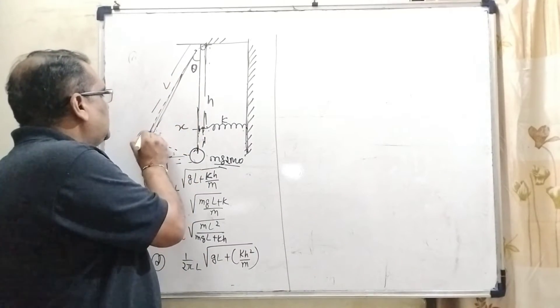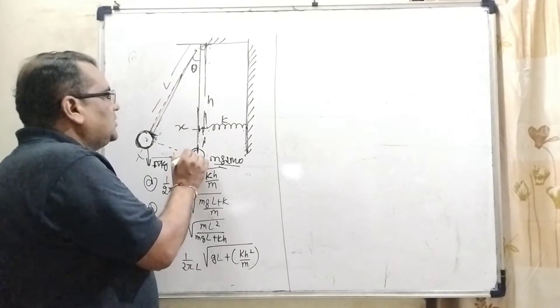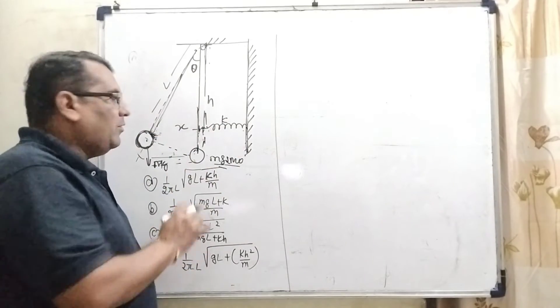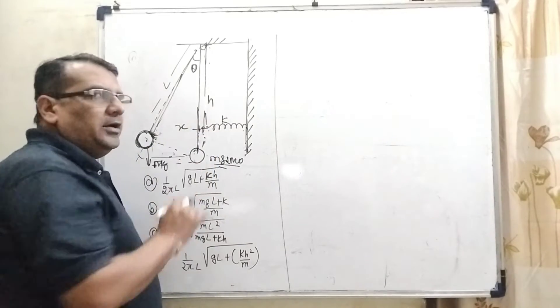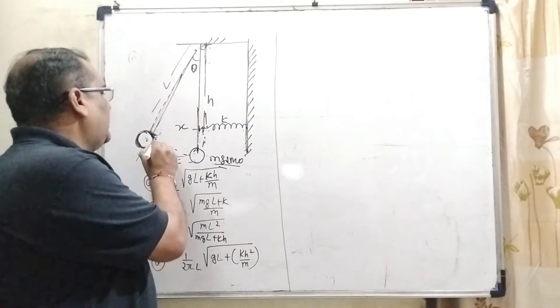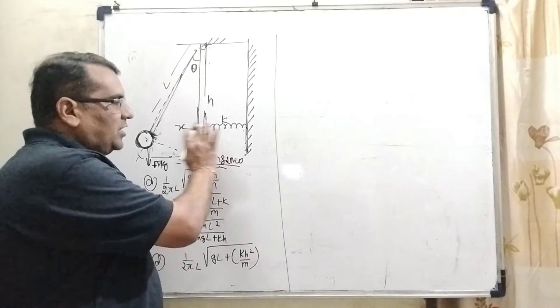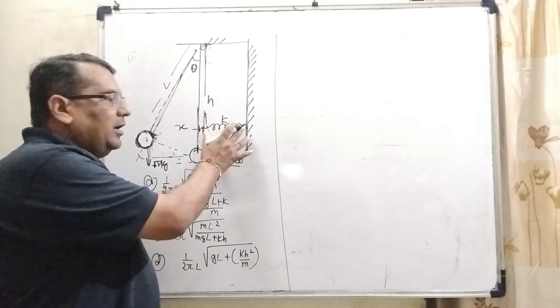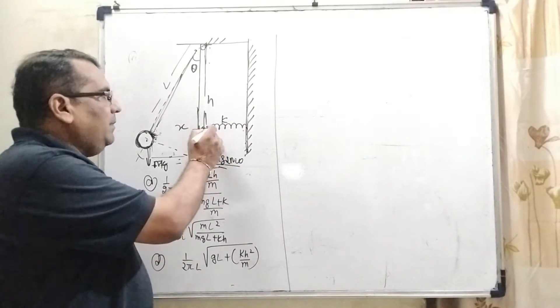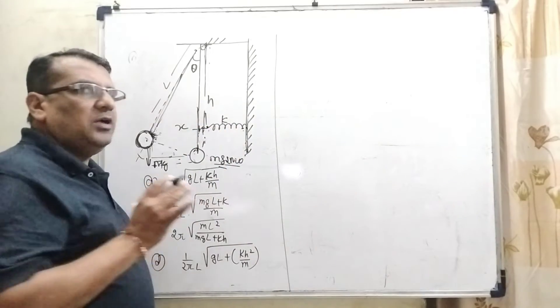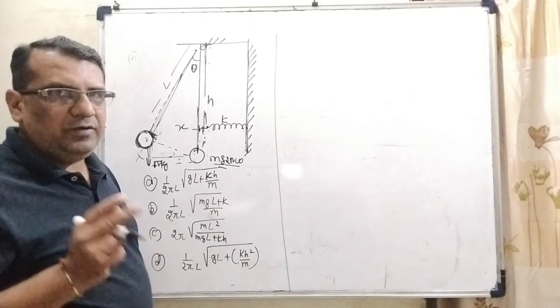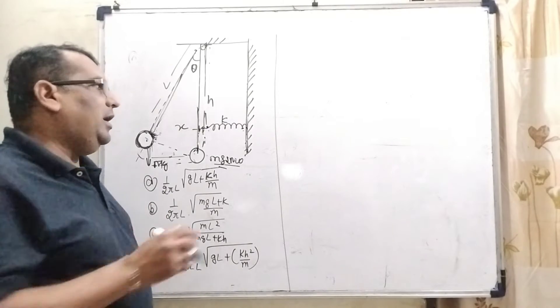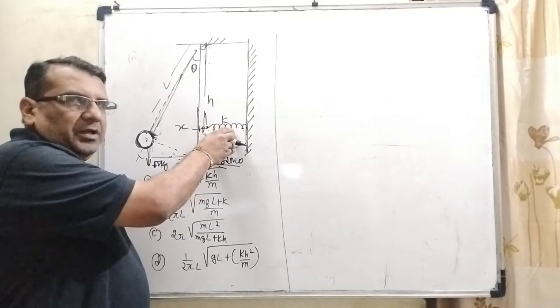When that is, it is falls on the springs from their extreme position, then component of Mg, here component of Mg that is Mg sin theta strikes. So, Mg sin theta and the restoring force of the spring again gives the torque. So, therefore, two components of the torque. First, Mg sin theta and the restoring force of the spring.